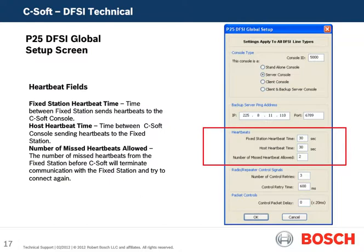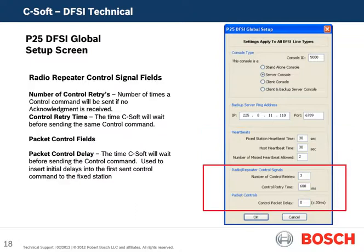There are three entries for heartbeats. The fixed station heartbeat time is the time between heartbeats sent by the fixed station to the C-SOFT console. The host heartbeat time is the time between C-SOFT consoles sending heartbeats to the fixed station. The number of missed heartbeats allowed is the number of missed heartbeats from the fixed station before C-SOFT will terminate communication with the primary fixed station and try to reconnect or connect to the backup fixed station. The radio repeater control signal fields include the number of control retries — the number of times a control command will be sent if no acknowledgement is received — and the control relay time, which is how long C-SOFT waits before resending the same control command.